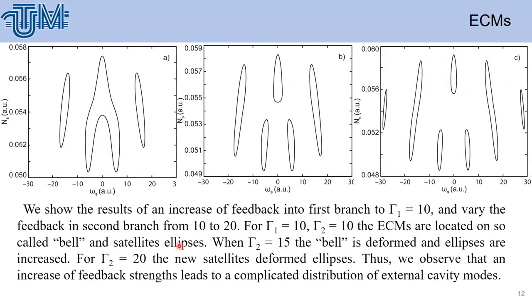Now, let's look when we change the feedback - we can do by changing the reflectivity in the first branch, in the second branch, and we play with the parameters. For a small increase of feedback strength in the first branch to 10, then the bell appears to ellipses on the left side, on the right, then we have the distribution of this bell and also a lot of ellipses, which are present for feedback strength Γ which is 15 in units, 1 divided by nanoseconds.